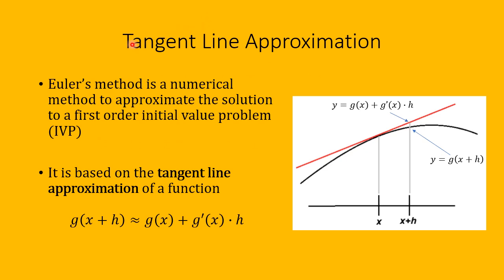First, let's consider the tangent line approximation to a function. We'll find out that Euler's method is a numerical method that approximates the solution to a first-order initial value problem, and Euler's method is based on the tangent line approximation of a function.